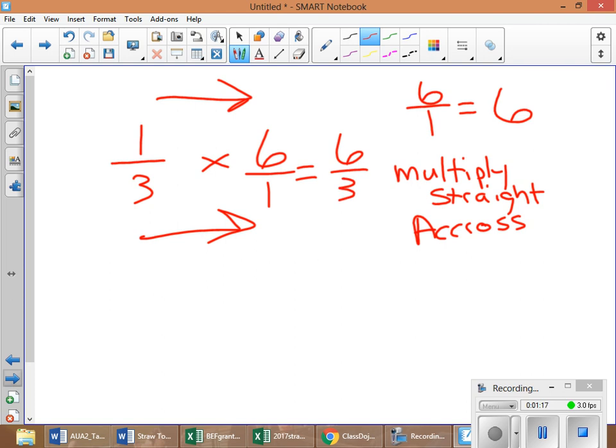Now, if you watched my previous video, you will know now that I am not happy with that answer. I am going to now require you to reduce everything. So, if you look at 6 over 3, 6 over 3 equals the same thing as 6 divided by 3. And 6 divided by 3 equals 2. Your answer of 1/3 times 6 is 2.